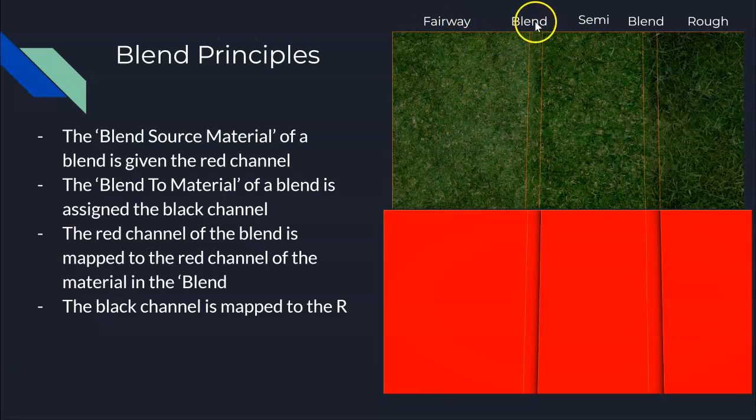Over here we have a fairway, in the middle a semi, and on the right we have rough. Then we have two blends - this blend which connects fairway to semi, and this blend which connects semi to rough. Now underneath here I turned on vertex painting for all five of these meshes: fairway, this blend, semi, this blend which is a separate mesh, and rough. So I turned on vertex painting and this is what it looks like. Our fairway's primary color end to end is red, semi end to end is red, and rough end to end is red.